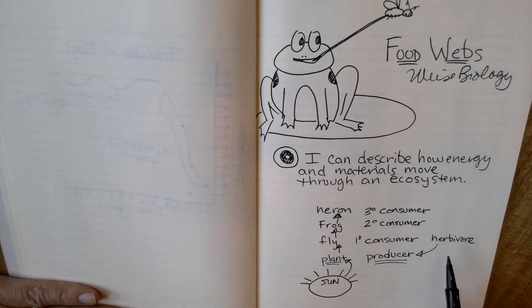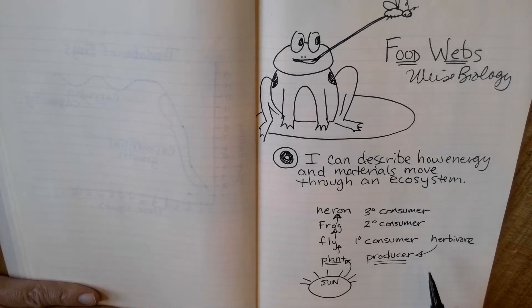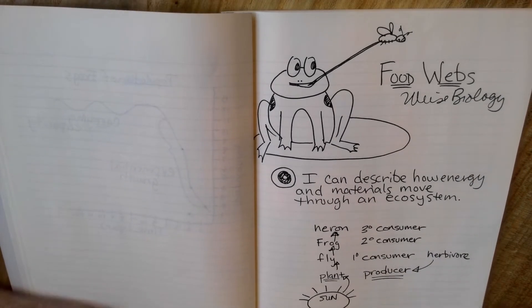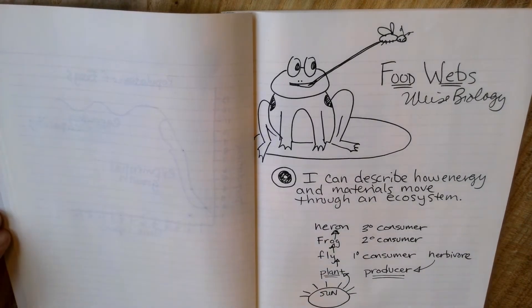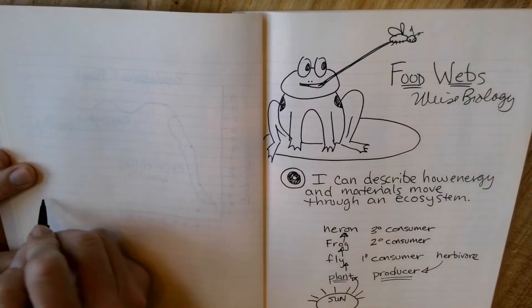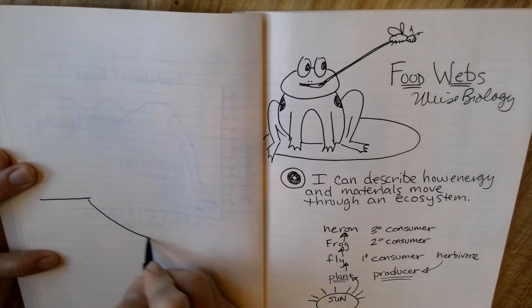Secondary consumers eat these herbivores, considered producers, and we look at how they work together to function in an ecosystem. So we're going to look at a pond water ecosystem that's similar to the one we have out by our high school. I'm going to draw a little pond type ecosystem.